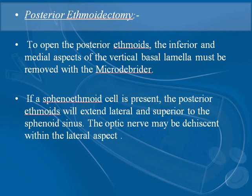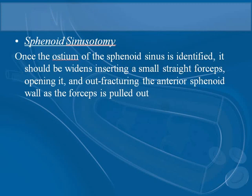For posterior ethmoidectomy, the inferior and middle aspect of the vertical basal lamella must be removed with a microdebrider. If a sphenoethmoidal cell is present, the posterior ethmoids will extend laterally and superiorly to the sphenoid sinus, so the optic nerve may be dehisced within the lateral aspect. Then comes sphenoid sinusotomy — once the ostium of the sphenoid sinus is identified, it should be widened by inserting a small straight forcep or cup forcep, opening it and out-fracturing the anterior sphenoid wall as the forcep is pulled out.